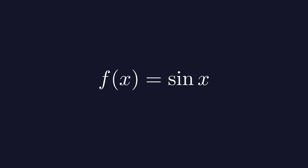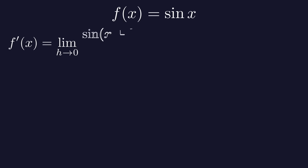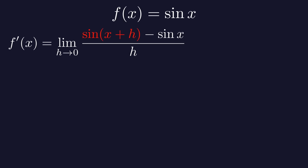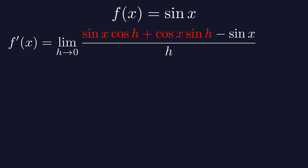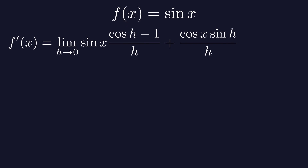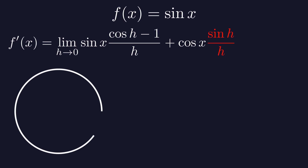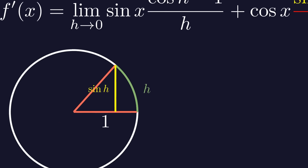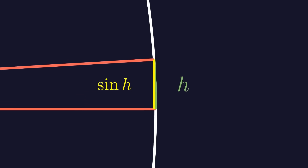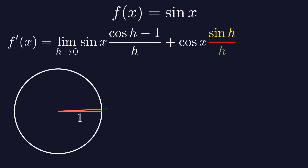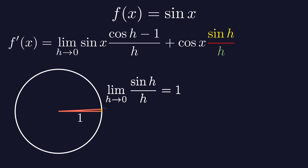Finding derivatives for some functions like sine of x requires a bit more work than just using those rules. We have to go back to the definition of a derivative. From the definition, the derivative of sine of x is the limit as h approaches 0 of sine of x plus h minus sine of x divided by h. We can use a trigonometric identity to expand sine of x plus h into sine of x times cosine of h plus cosine of x times sine of h. Then we divide this expression into two parts. From the first fraction, we can factor out sine of x. From the second fraction, we can factor out cosine of x. Let's first see what happens to sine of h over h as h approaches 0. Imagine a circle with a radius of 1 and an angle of h radians. The length of the arc created by this angle is also h. The line perpendicular to the radius is equal to the sine of h. As h gets smaller and smaller, the sine of h gets closer and closer to the arc. So sine of h divided by h gets closer to 1. So the limit as h approaches 0 of sine of h divided by h is equal to 1.